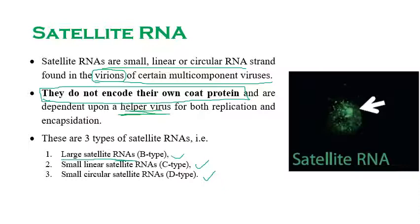On the right side of the diagram we can see the diagrammatic representation of satellite RNA. Satellite RNA is a small linear or circular RNA component mostly observed in multi-component virion particles. The three types discovered so far are large satellite RNA (B-type), small linear satellite RNA (C-type), and small circular satellite RNA (D-type).